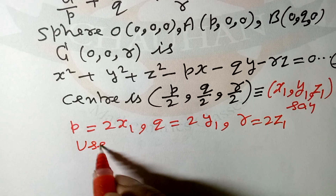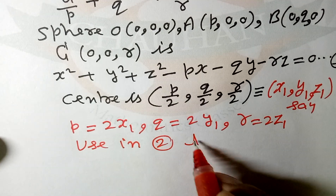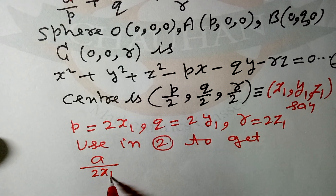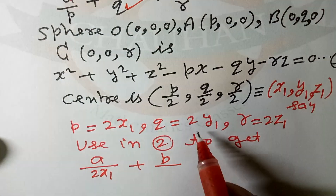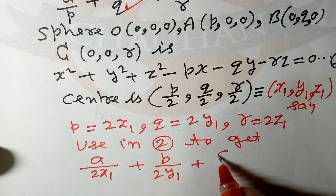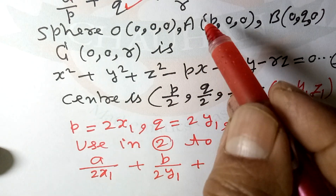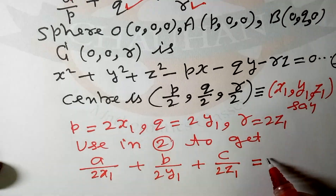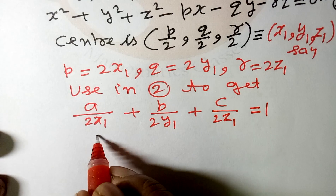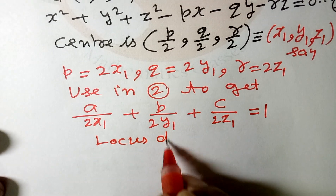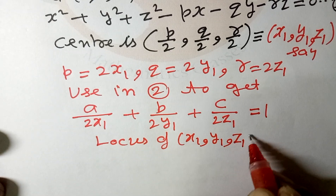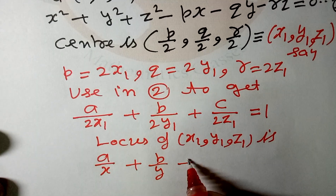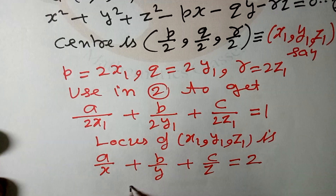Use these values in equation 2: A/P means A/(2x1), B/Q means B/(2y1), C/R means C/(2z1), equals 1. So the locus of (x1, y1, z1) is obtained by dropping the suffix and multiplying by 2. We get the answer: A/x + B/y + C/z = 2.